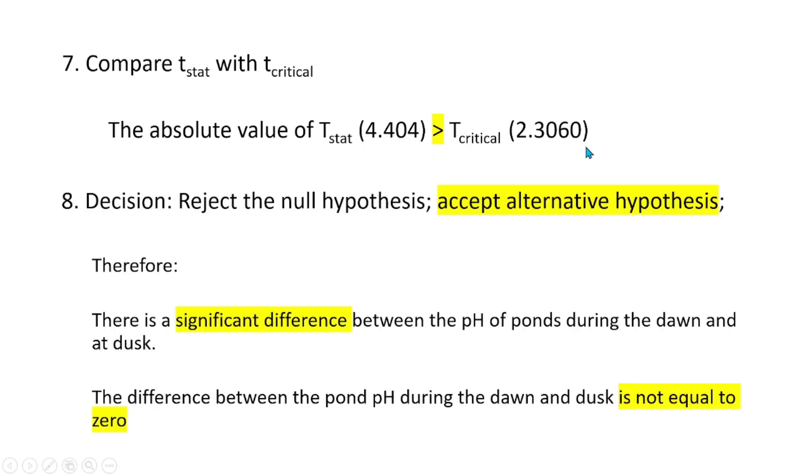Step 8 is to make a decision. In this instance, we shall reject the null hypothesis and accept the alternative hypothesis. Therefore, there is a significant difference between the pH of ponds during dawn and dusk. Alternatively, the difference between the pond pH during dawn and dusk is not equal to 0.